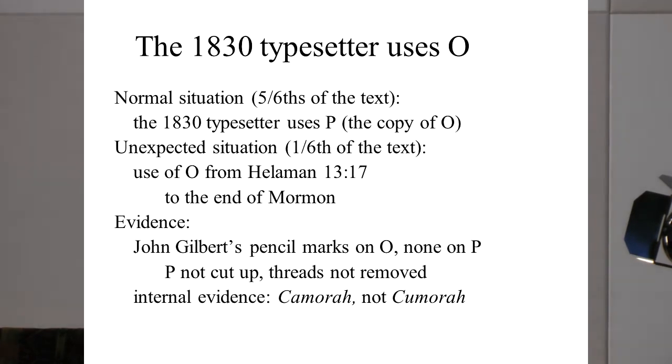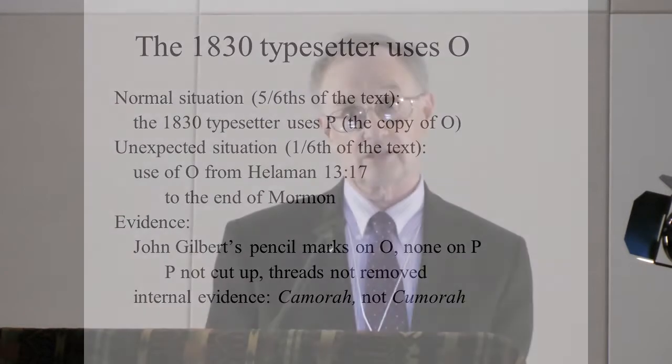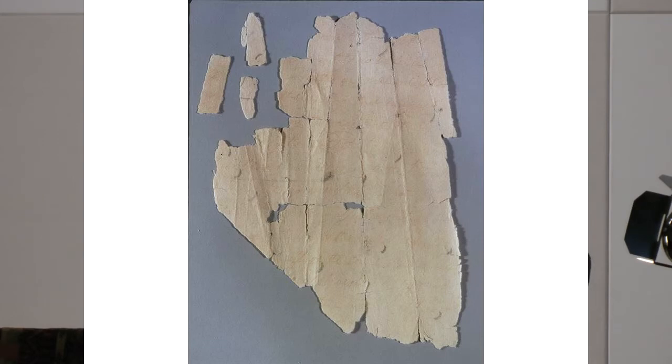There's internal evidence too: the 1830 edition misspells 'Cumorah' — but if the typesetter had the printer's manuscript in front of him with a clear U, he wouldn't have misspelled it. He must have been looking at the original, which had an A — Oliver sometimes mixed up his A's and U's. So my theory was that the copyists fell behind and had to take in the original instead. This is from Helaman 15, and there are pencil marks visible. The typesetter would add punctuation — about one-third of the time in pencil to the manuscript before setting, and two-thirds of the time on the run as he went.